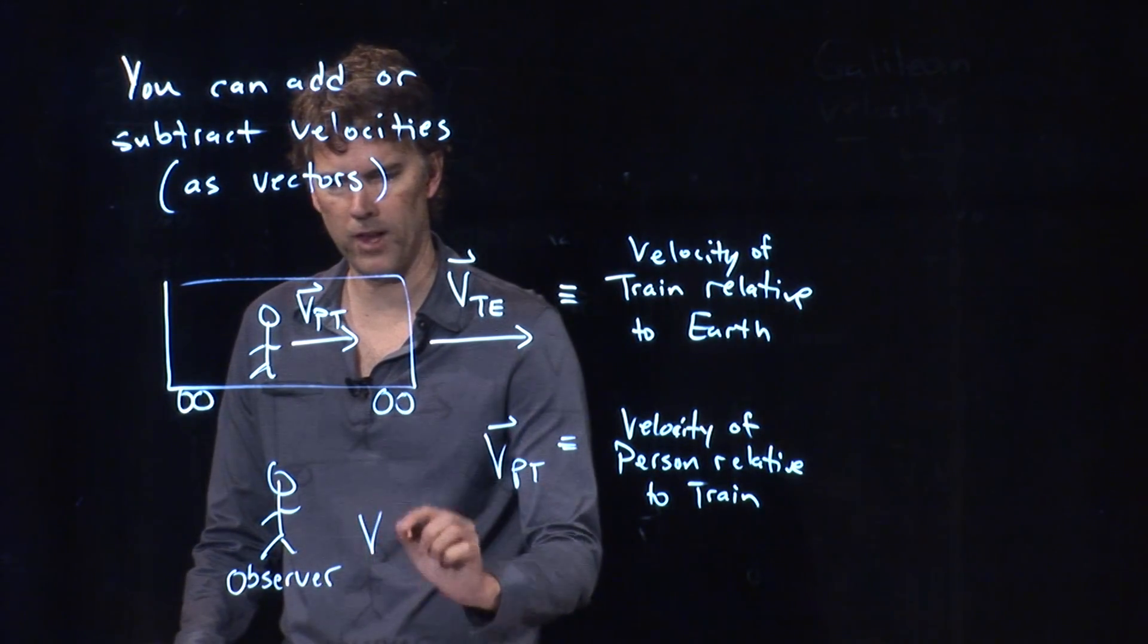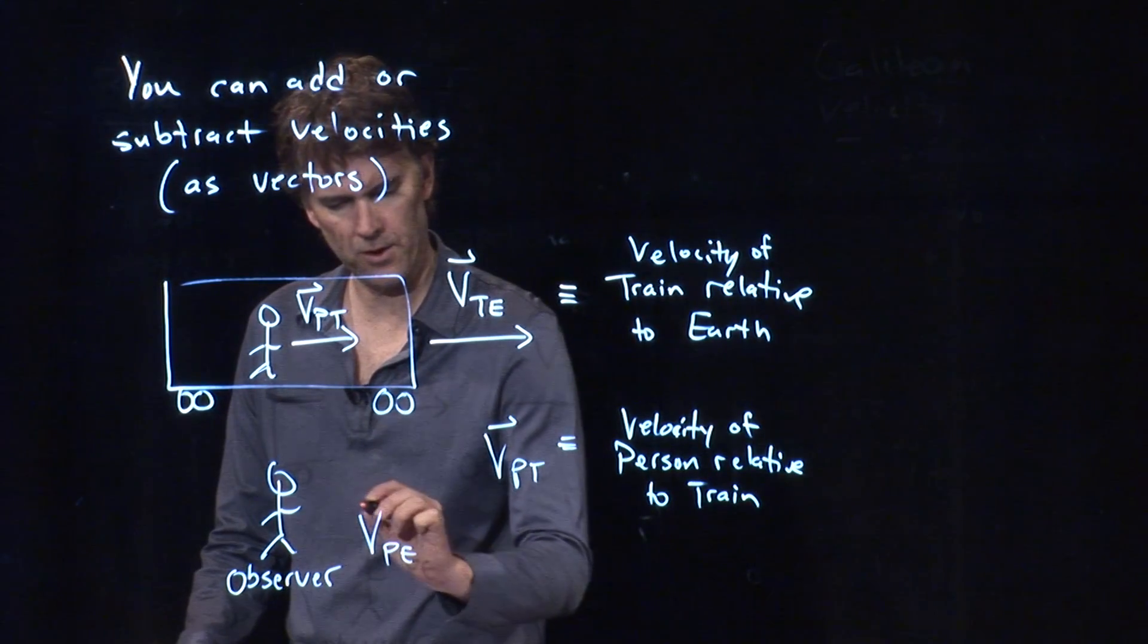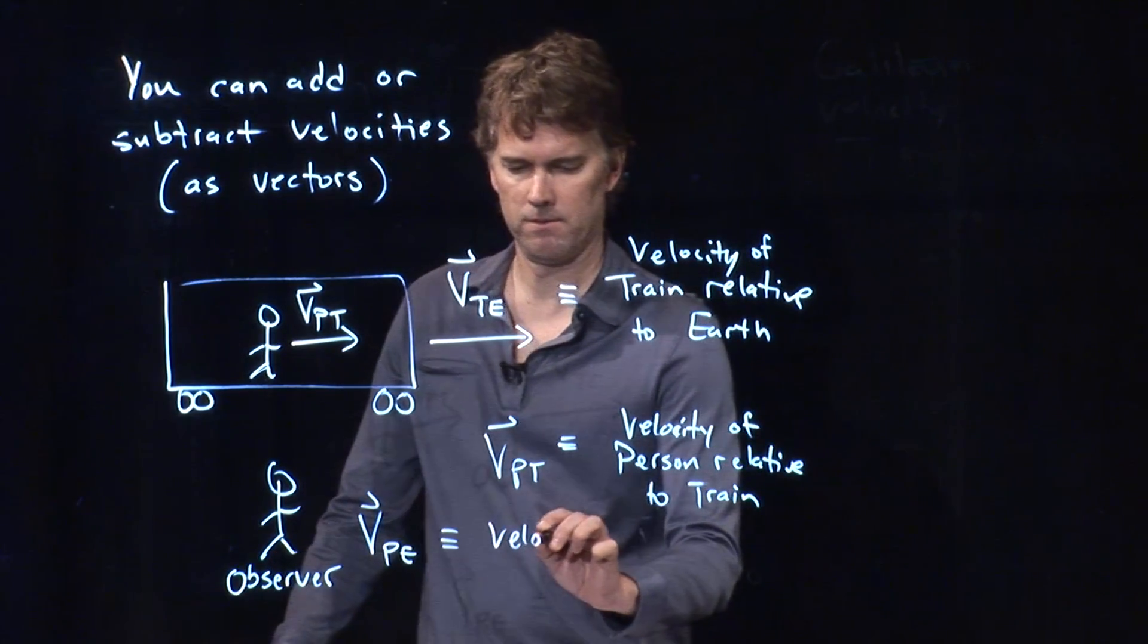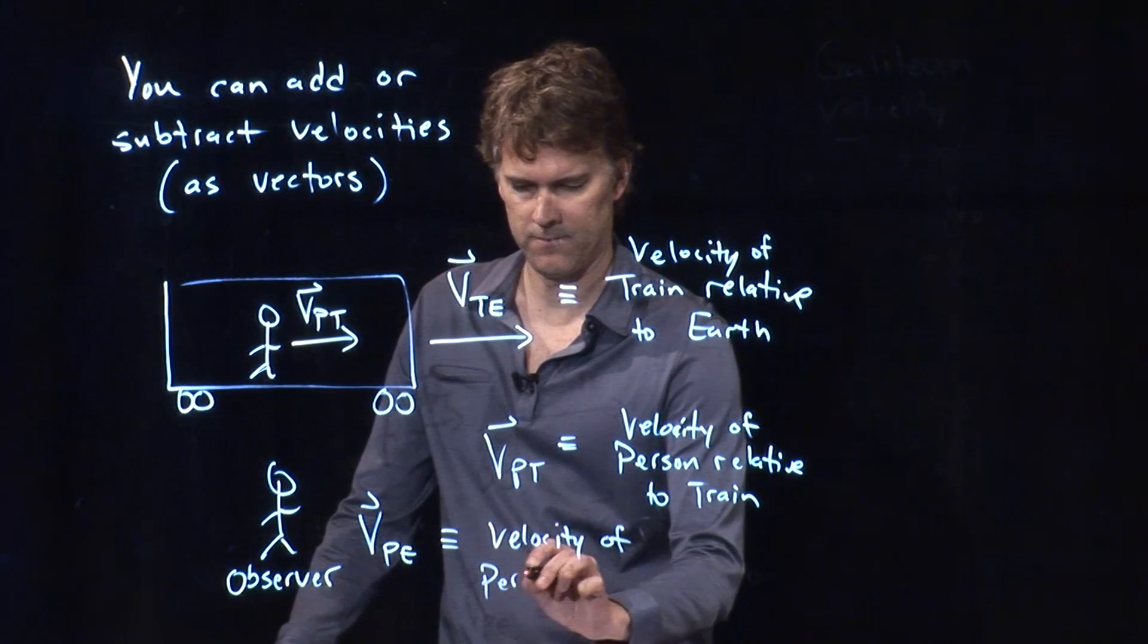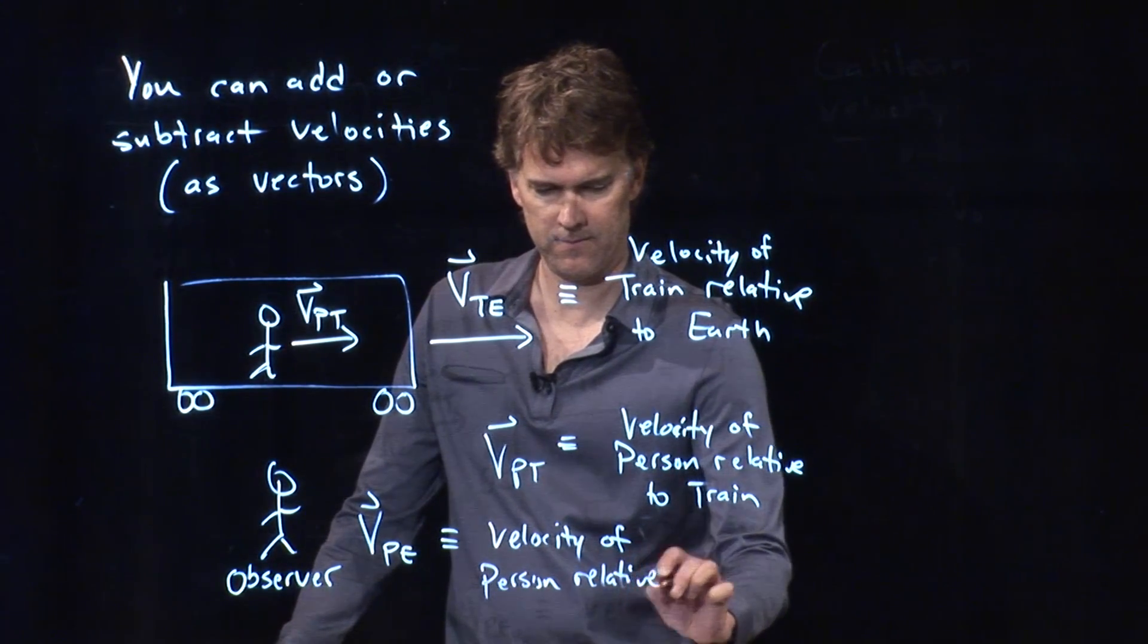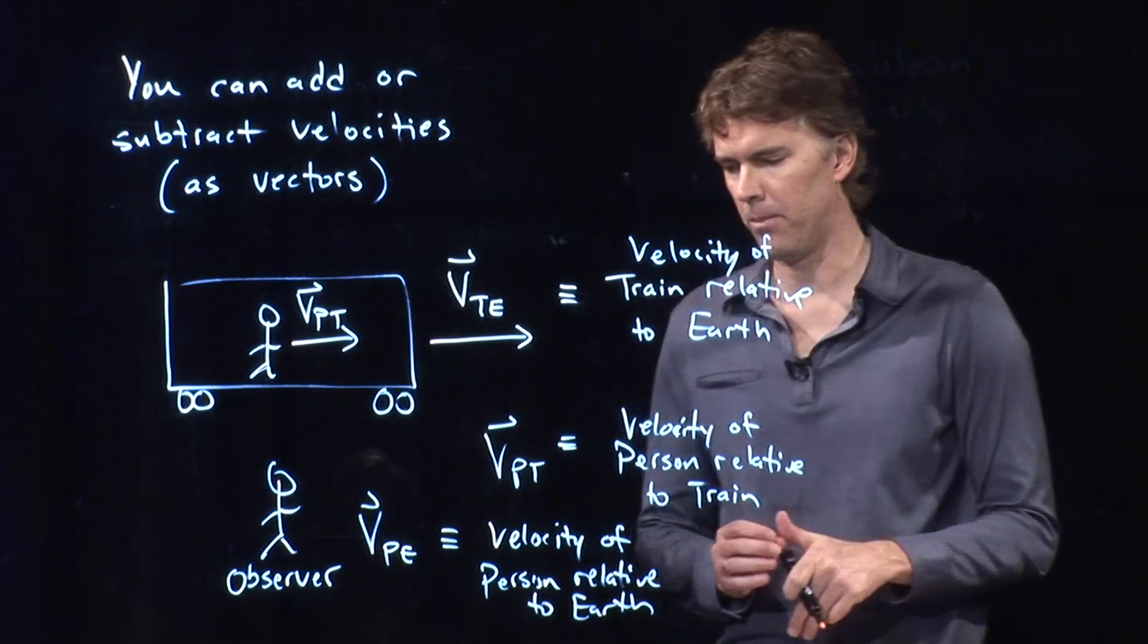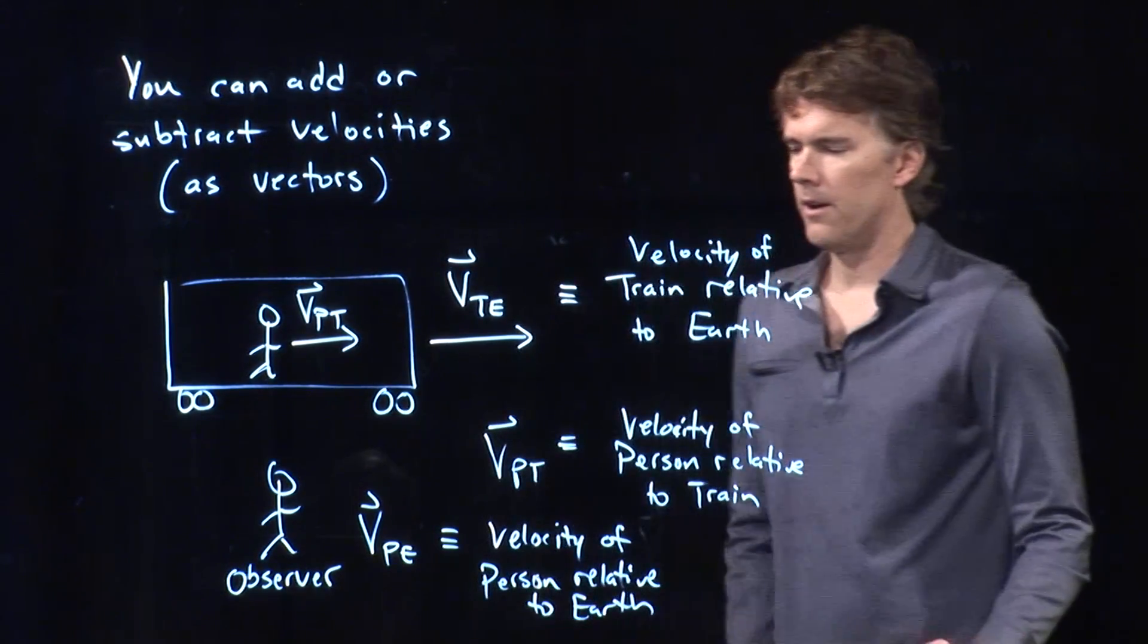This is the observer in the stationary frame. And they're going to say, oh, the velocity of that person relative to the Earth is what? And what is the velocity of the person relative to the Earth?